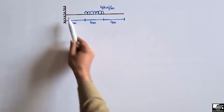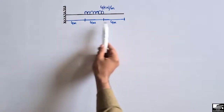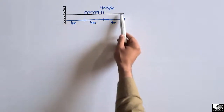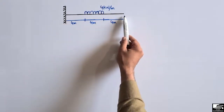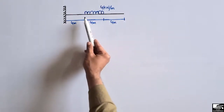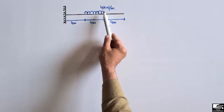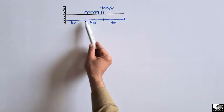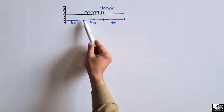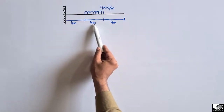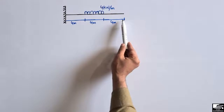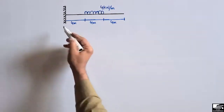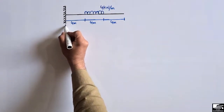This is a cantilever beam where one end of the beam is a fixed support and the other end is free. There is also a uniformly distributed load of 4 kN per meter acting at the center of the beam, distributed over a distance of 4 meters. The total length of the beam is 12 meters.